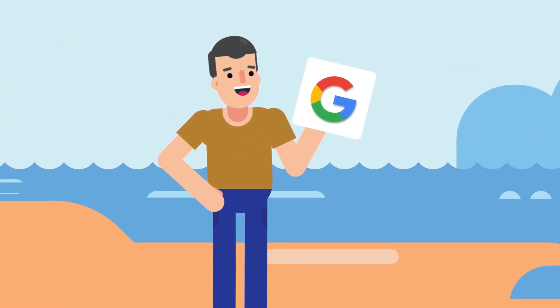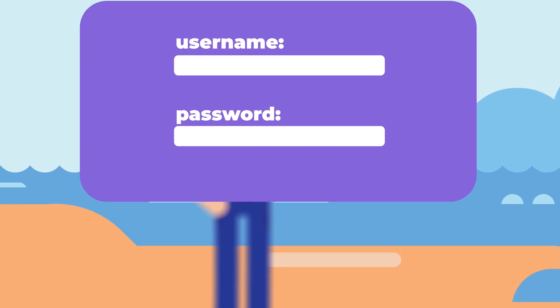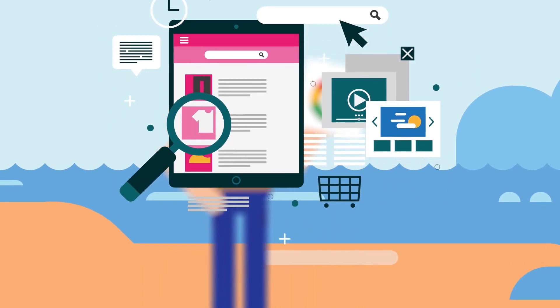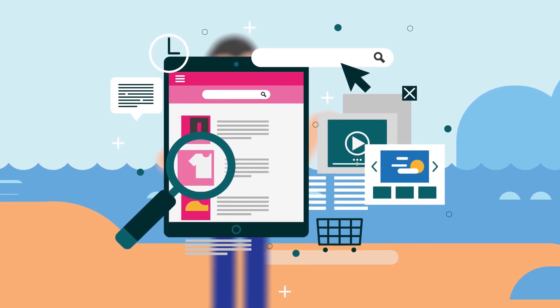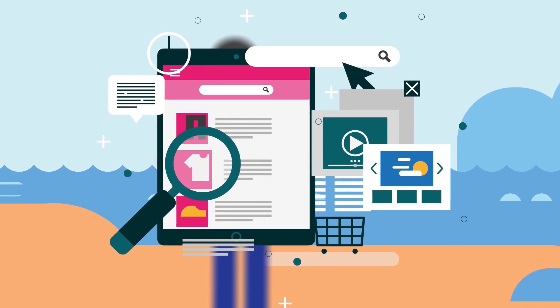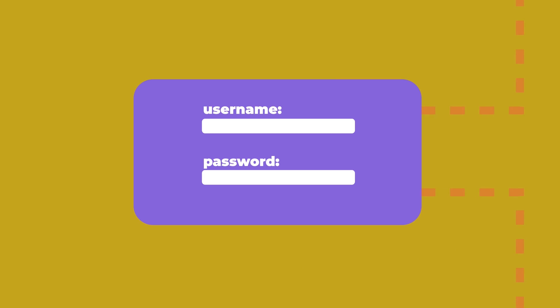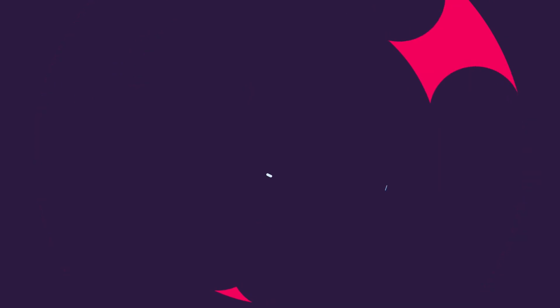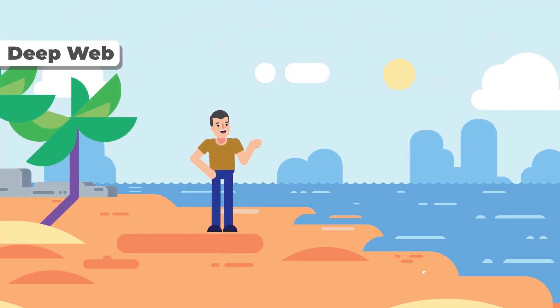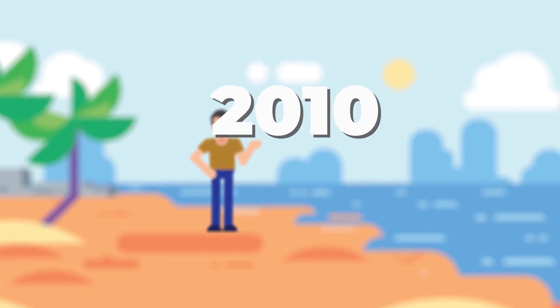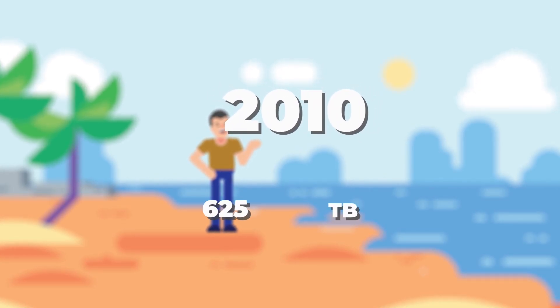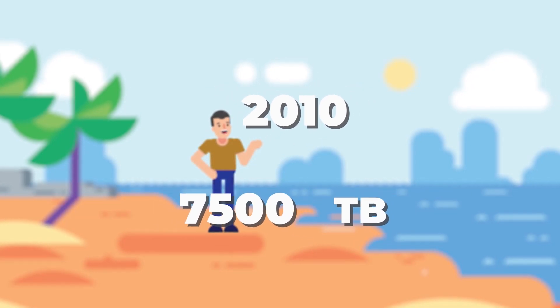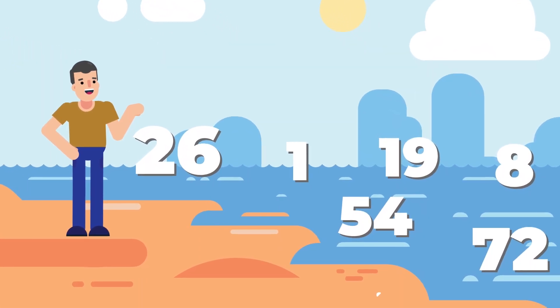The deep web includes everything not shown by search engines. This can include a wide range of content — for example, a page that requires a password to log in, data of banking operations, scientific papers, and medical records, a site whose author didn't share it with anyone or abandoned it long ago, or even pages generated for a specific user, such as a news feed or a shopping cart. No matter how powerful a search engine is, the user sees only the tip of the iceberg. According to rough estimates, the deep web is 400 to 500 times larger than the visible web. In 2010, the volume of information in the deep web was estimated at 7,500 terabytes. Because new pages appear so quickly, it's simply impossible to measure this exactly.